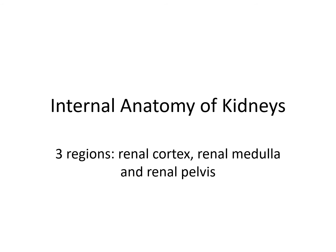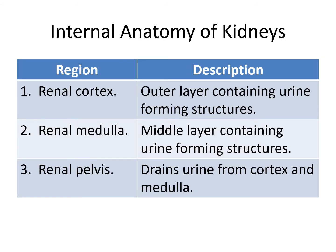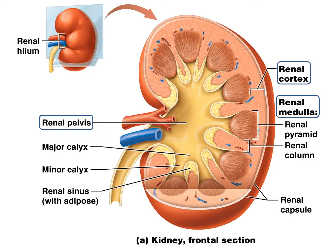The internal anatomy of the kidneys has three regions: the renal cortex, the renal medulla, and the renal pelvis. The renal cortex is the outer layer containing the urine-forming structures. The renal medulla is the middle layer containing the urine-forming structures. And the renal pelvis drains the urine from the cortex and medulla. In the diagram, you have the outer renal cortex, the inner renal medulla, and the deep renal pelvis.